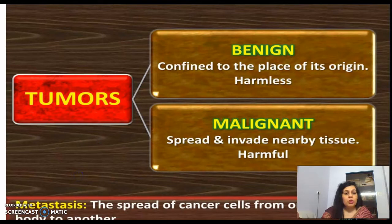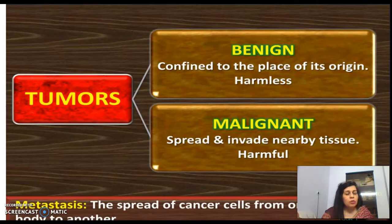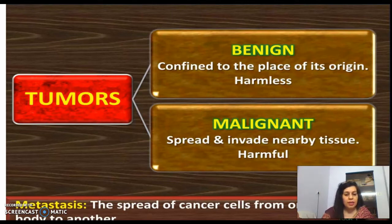Tumors are of two types: benign and malignant. A benign tumor is one where the cancer cells remain in the particular place of their origin and are considered harmless because they stay in one place. Malignant tumors, however, are cancer cells that start spreading and invading nearby tissues. The problem is that these cancer cells spread from one part of the body to other parts.